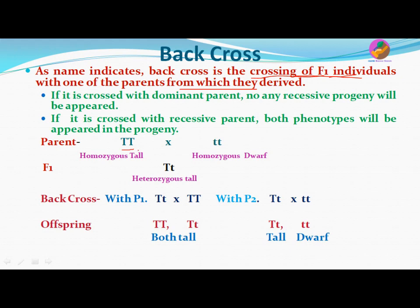Here we have selected two parents: one is homozygous dominant and another is homozygous recessive — a homozygous tall plant and a homozygous dwarf plant. The F1 offspring from these parents will be capital T small t, a heterozygous tall plant. Tallness is dominant, so the plant appearing in F1 generation is tall, though small t is also present but cannot express itself because it is masked by the dominant allele.